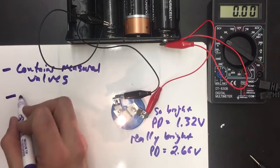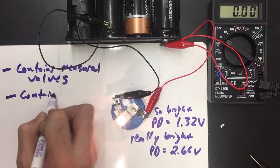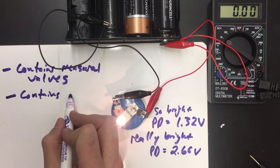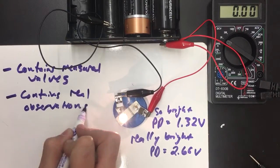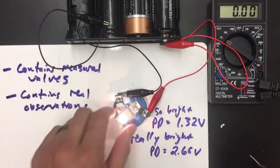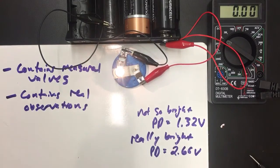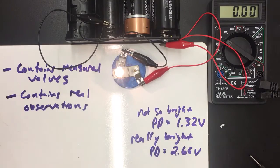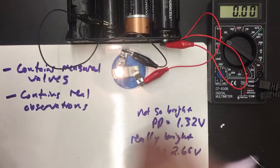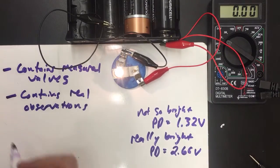This contains real observations. Specifically, the bulb is not so bright, and the bulb is really bright. These observations and values are actual observations that we are making that you can see in front of you.